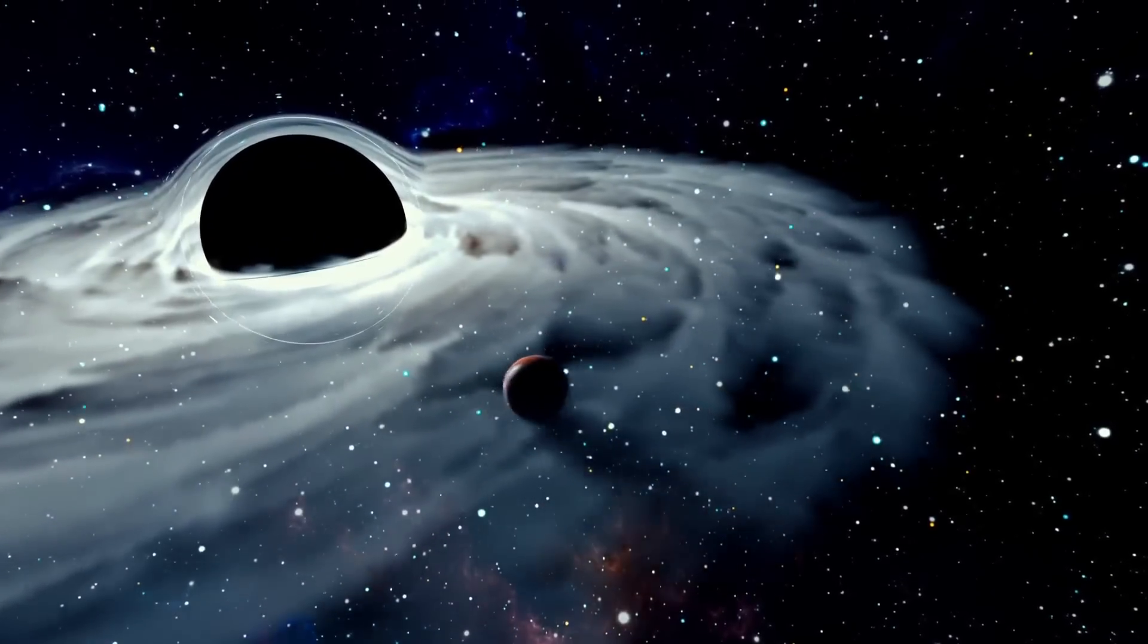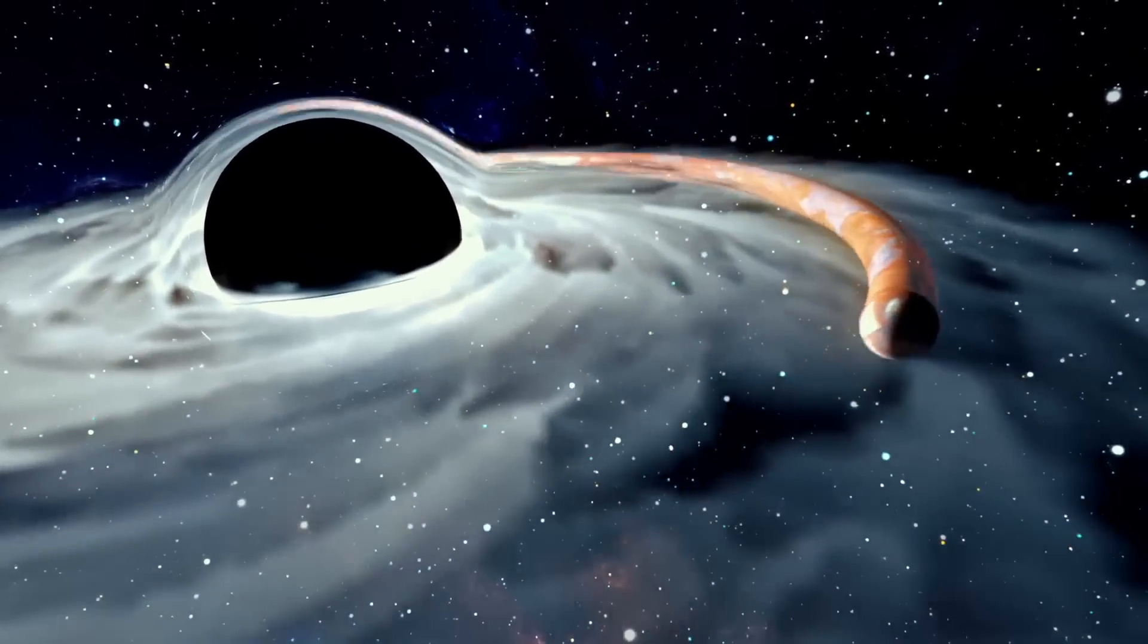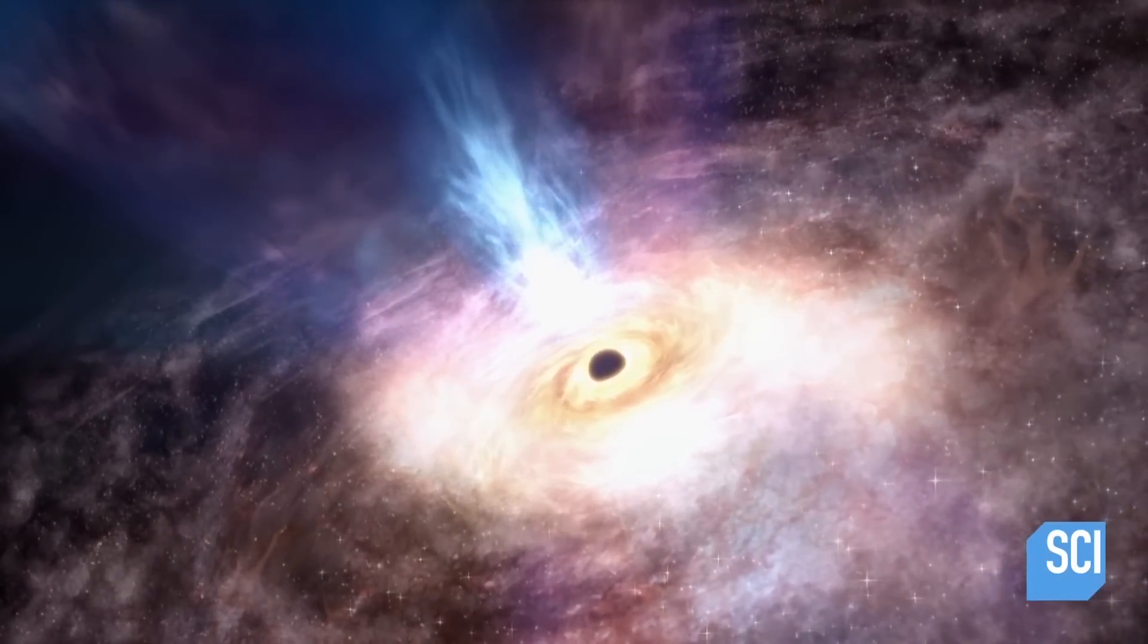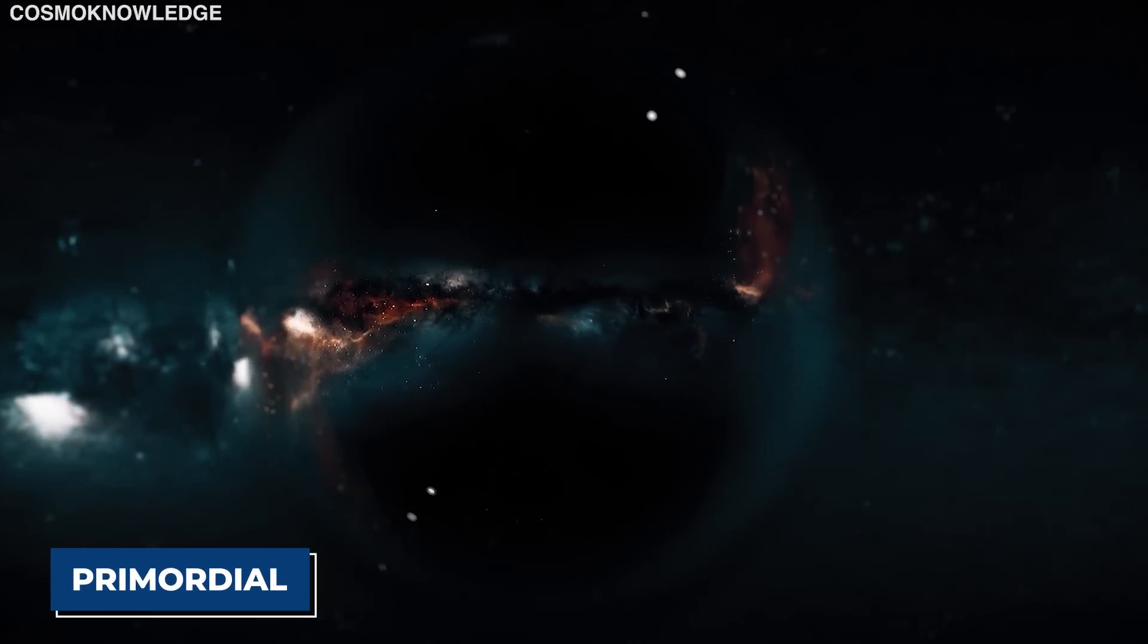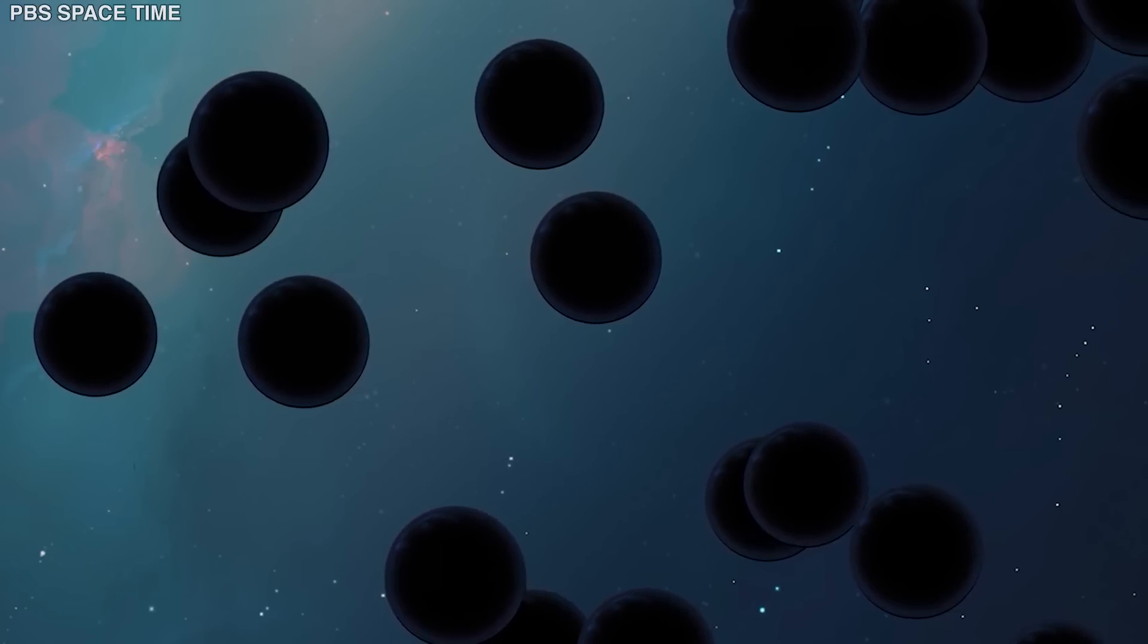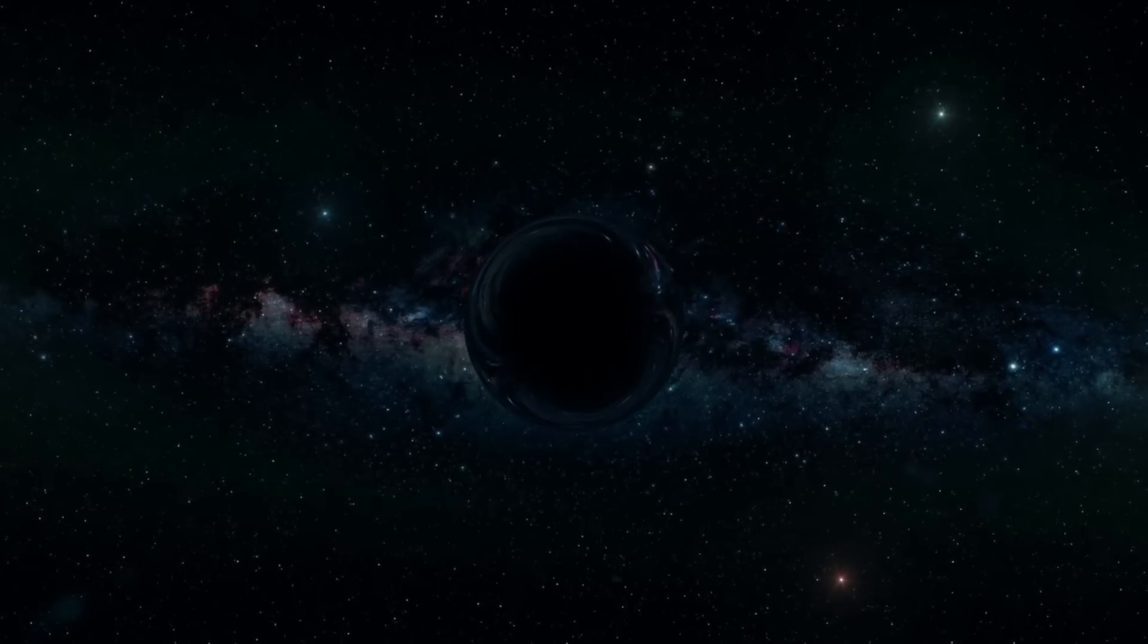Black holes can come in a range of sizes, but there are three main types. The black hole's mass and size determine what kind it is. The smallest ones are known as primordial black holes. Scientists believe this type of black hole is as small as a single atom but with the mass of a large mountain.